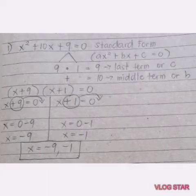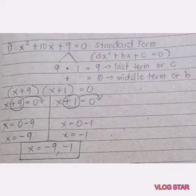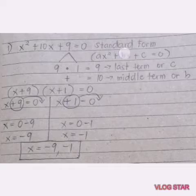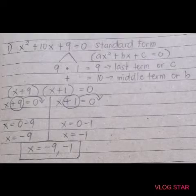In solving quadratic equations by factoring, the given should always be written in standard form, which is ax squared plus bx plus c equals 0.